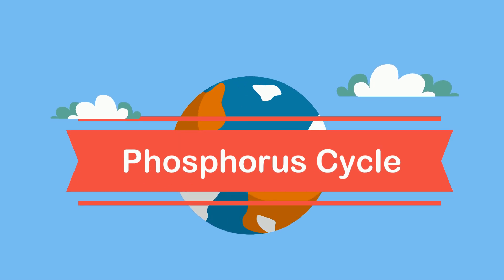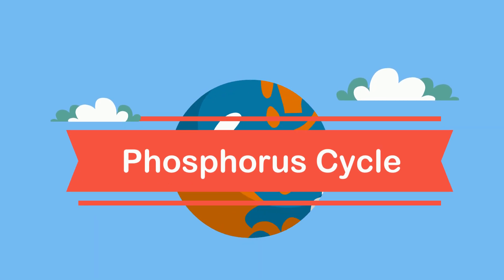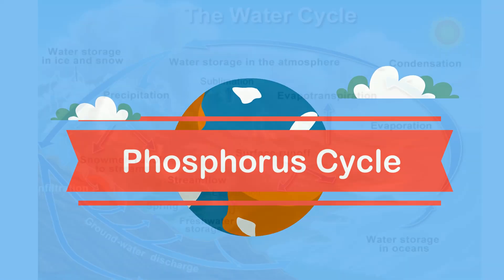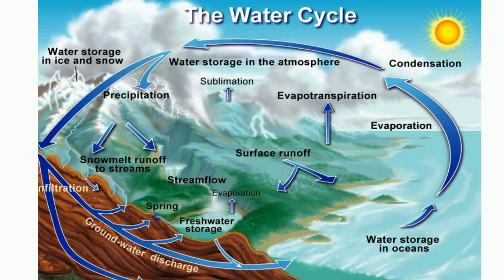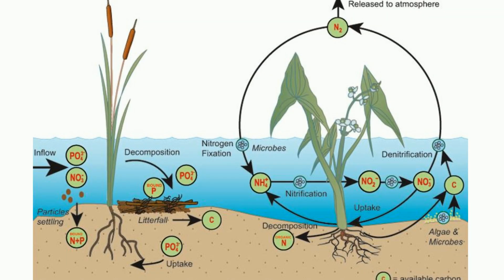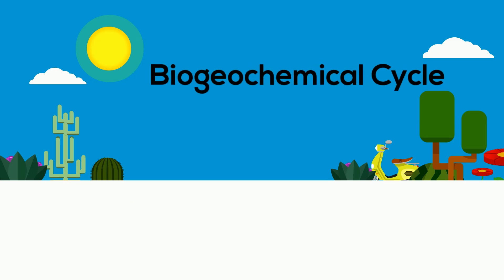Welcome to Moo Moo Math and Science and the Phosphorus Cycle. Along with the Water Cycle, the Carbon Cycle, and the Nitrogen Cycle, the Phosphorus Cycle is another biogeochemical cycle that is essential for life on Earth.